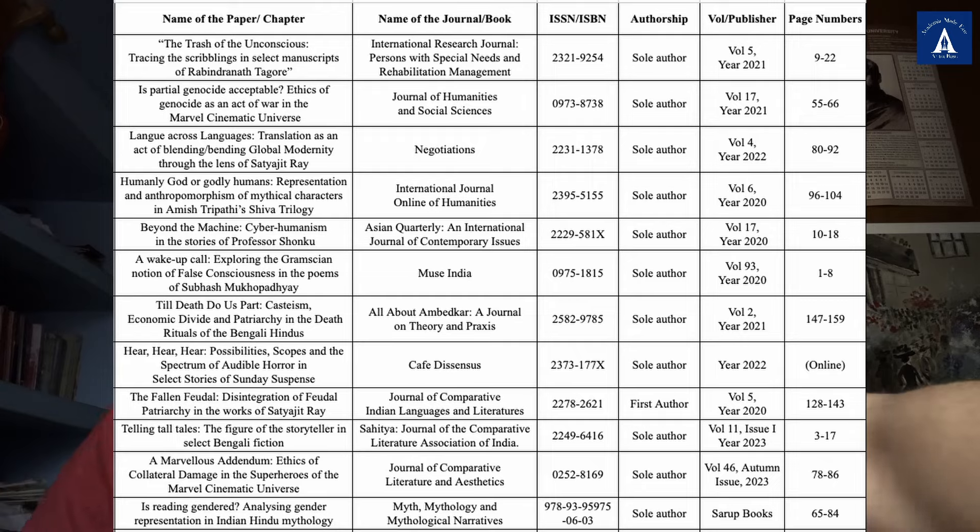Then there is Negotiations, published by the North Bengal University Department of English — this was the 2021 volume. The paper I published here was 'Long Across Languages: Translation as an Act of Blending/Bending Global Modernity Through the Lens of Satyajit Ray.' It's on page 80. This is again a paper very close to my heart, as it's on Satyajit Ray — as was my M.Phil thesis, which was on the translation of riddles and Satyajit Ray's Feluda.